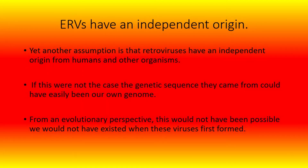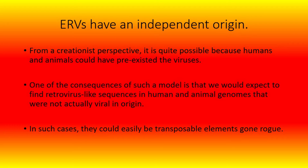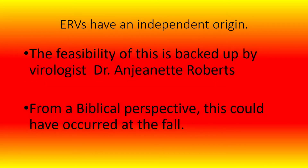Another assumption is that retroviruses have an independent origin from humans and other organisms. If this were not the case, the genetic sequences they came from could have easily been our own genome. From an evolutionary perspective this would not have been possible, since we would not have existed when these viruses first formed. From a creationist perspective, it is quite possible because humans and animals could have pre-existed the viruses. One consequence of such a model is that we would expect to find retrovirus-like sequences in human and animal genomes that were not actually viral in origin — possibly transposable elements gone rogue. The feasibility of this is backed up by virologist Dr. Ajanette Roberts, and from a biblical perspective, this could have occurred at the fall.